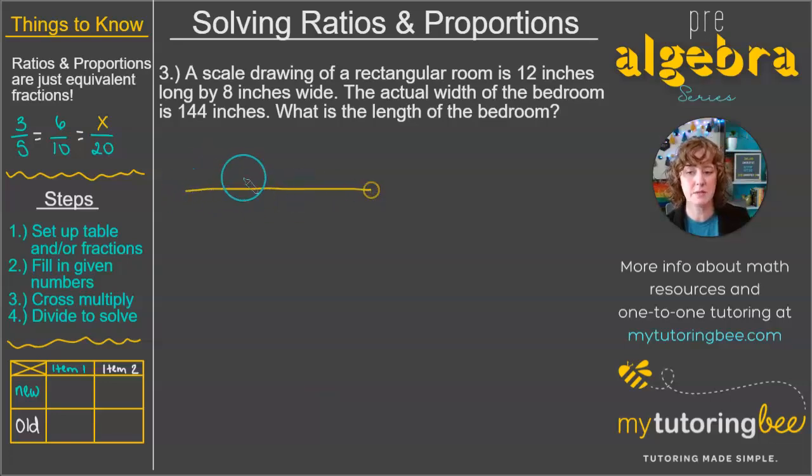Okay, so I'm going to use that same chart that we've been using. However, I'm going to use some different terms over here. Instead of new and old, what makes more sense for this problem is to write actual and scale. Because they gave us a scale, the dimensions of a scale drawing. So somebody has taken an actual bedroom and then reduced down its size proportionately into a drawing so that we could fit it on a piece of paper. So that is the scale dimensions of the room, the length and width, and then we also have the actual dimensions, the length and width of the room.